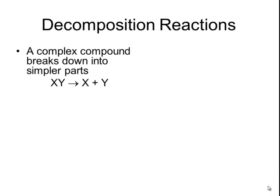In a decomposition reaction, a complex compound breaks down into simpler parts. The general form of the reaction is XY yields X plus Y. Notice we are starting with one reactant and breaking it down into smaller pieces, which is the exact opposite of a synthesis reaction in which we started with smaller pieces and combined them together to make one complex compound.